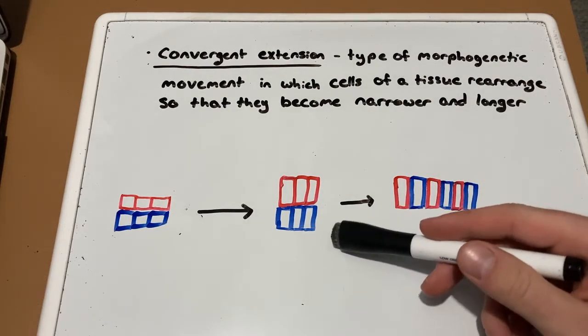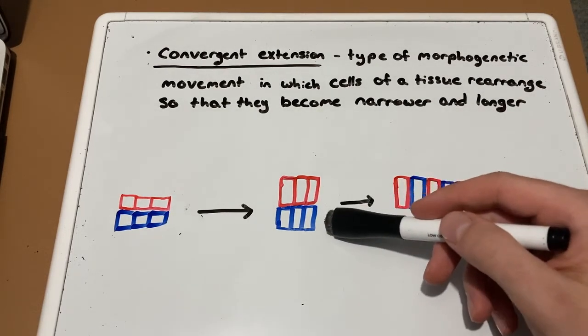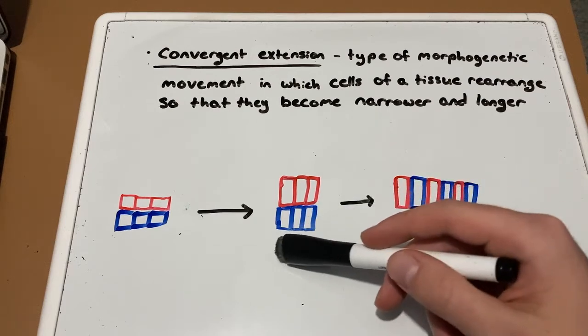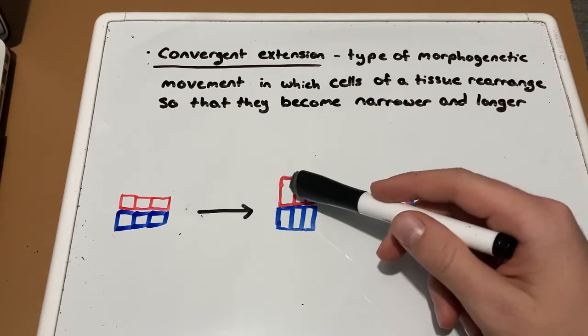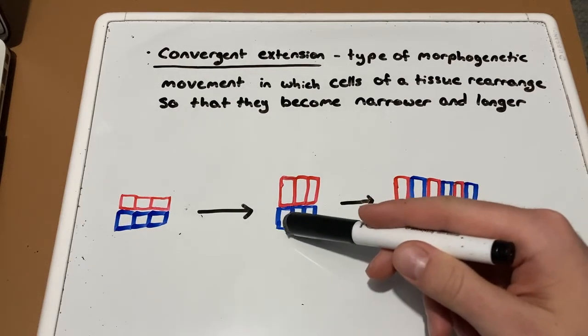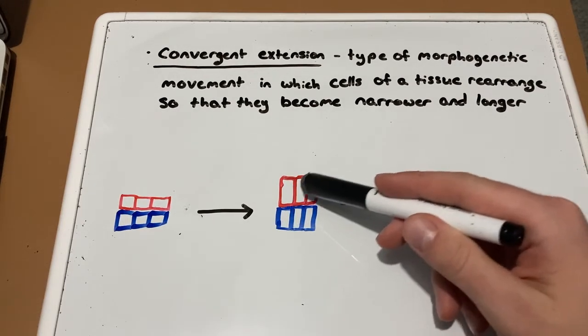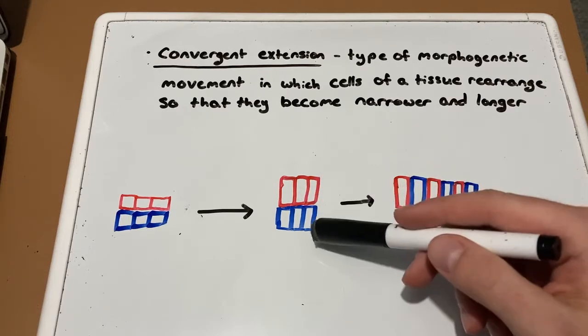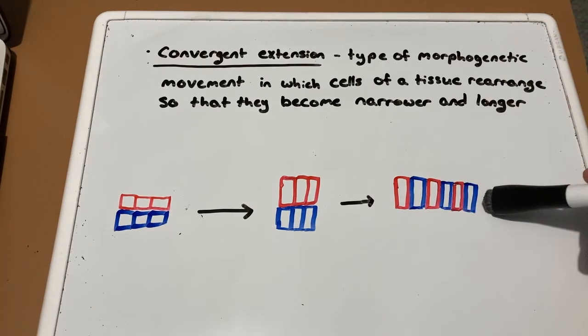And I've shown this using different colors. So as you see here, the blue are on the bottom, the red are on the top. What happens is this first blue will wedge between the first and second red cell, and so on and so forth. So the second will merge between the second and the third red cell, and then the third blue cell will go to the end.